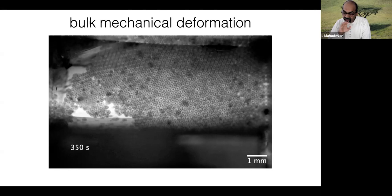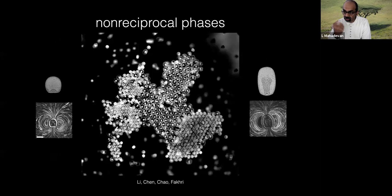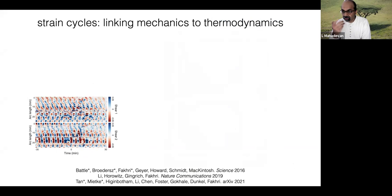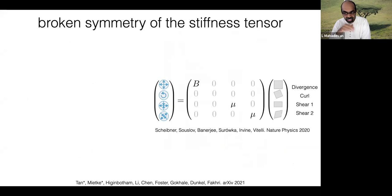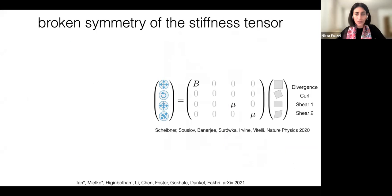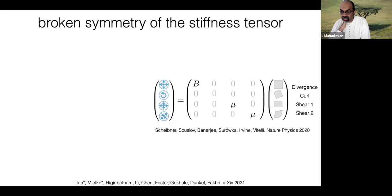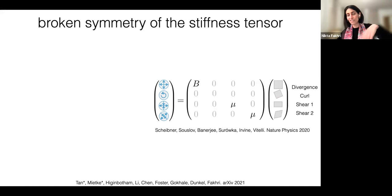Were there experiments in Joe Howard's group maybe 10-15 years ago associated with bound spermatozoa at high concentration that formed vortex crystals? Is there any connection to the phenomena you're seeing? I don't recall the details, but I think the dimensions are very different — we're looking at millimeter-sized structures. We should look into it, but I think there will be some differences though maybe some similarities as well.